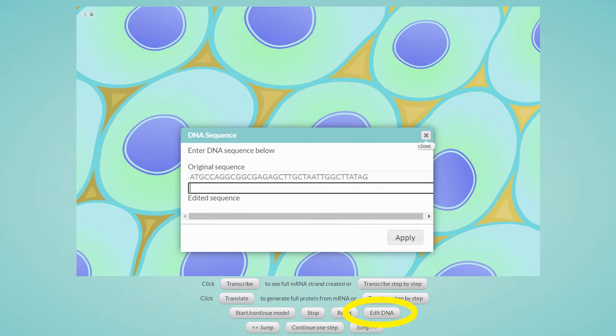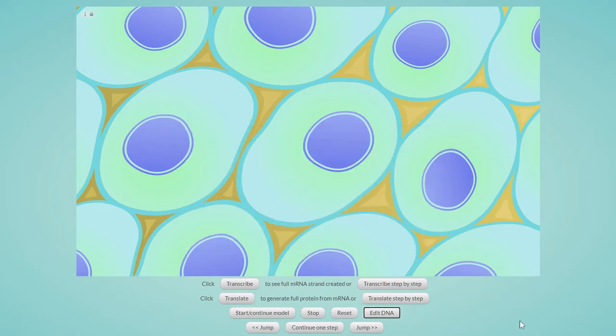I'm going to delete that sequence and paste in my own sequence. Okay, there it is. When the model runs, the process of transcription will use the sequence I just entered. All I need to do now is click apply, and then we're ready to go.